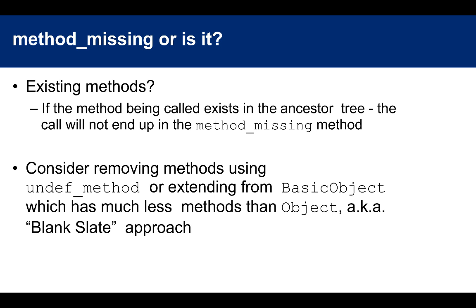You could extend from BasicObject. So far, everything has been extended from Object, which has its own methods. But Object itself inherits from BasicObject, which has almost no methods at all. So if you want the method_missing pattern and don't want certain methods from Object to interfere, you can extend from BasicObject — which has even fewer methods than Object. This is called the blank slate approach.